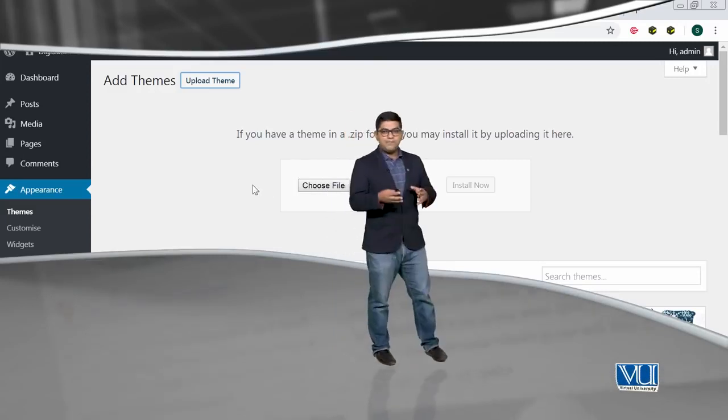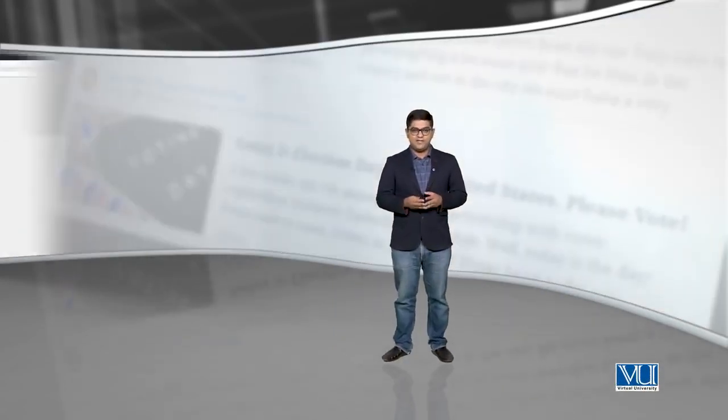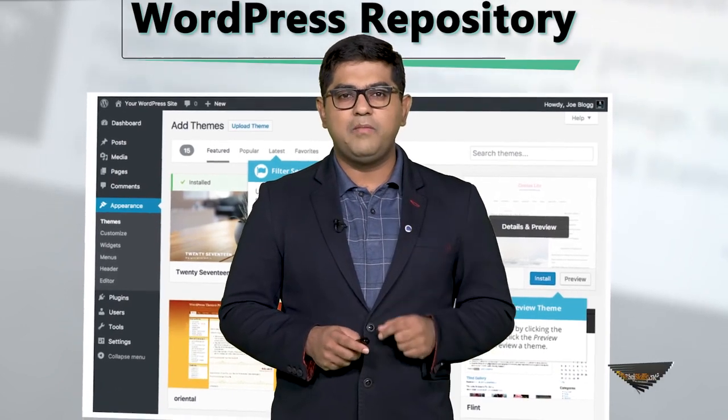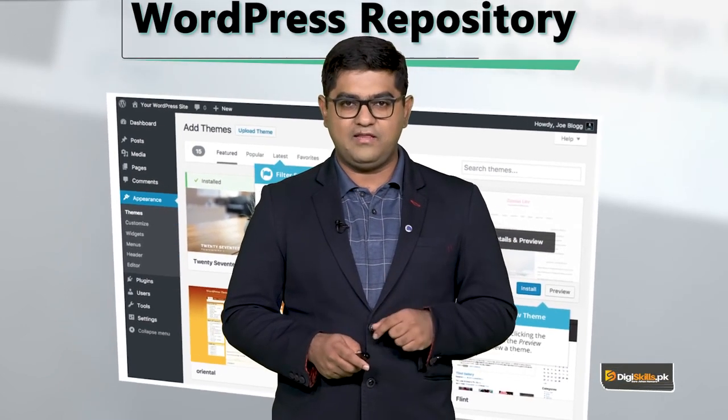The first option is that you download a theme's zip file from the internet — look for the best free theme available on the WordPress repository and download the zip file. However, this is not the most efficient way. The more efficient way is to go to your WordPress Appearance section and directly search for a theme and use the install button.